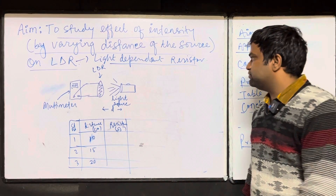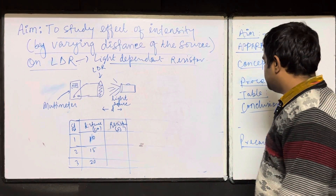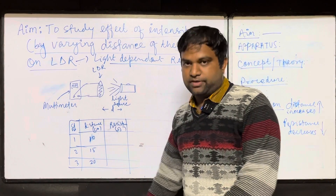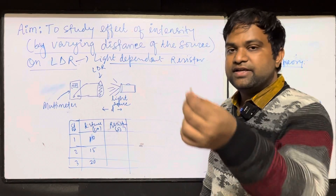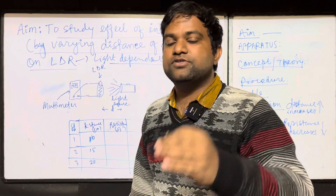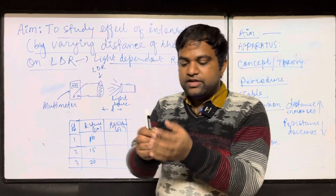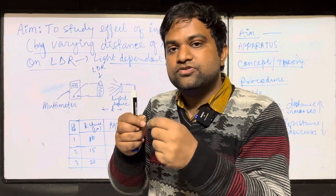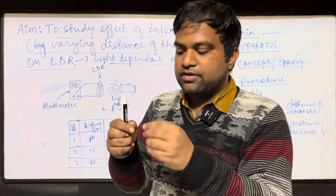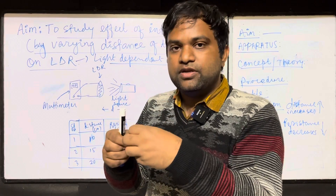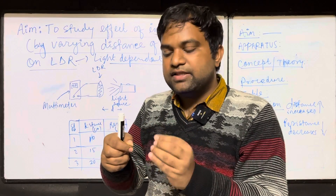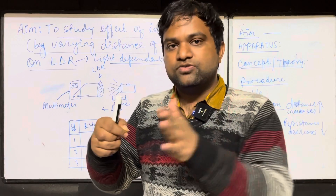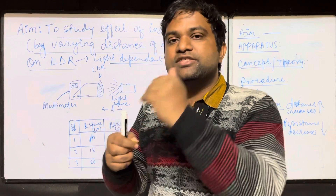I will share some instructions about what to do and what not to do during the exam, and also what are the probable Viva questions they may ask. These LDRs are used in the automation of street lights. When light is incident on the LDR, its resistance decreases. The more intense the light on the LDR, the more the resistance decreases. When we take the source away, the distance increases, less light is incident, and the resistance will be high.